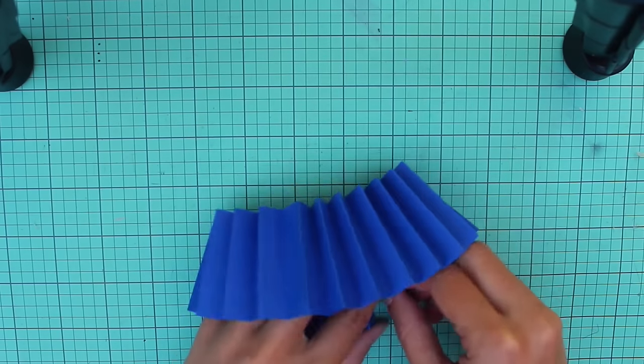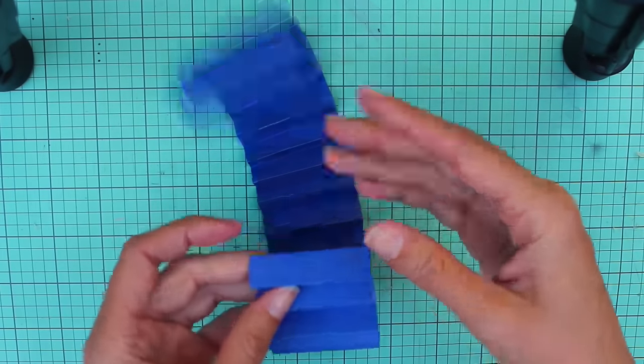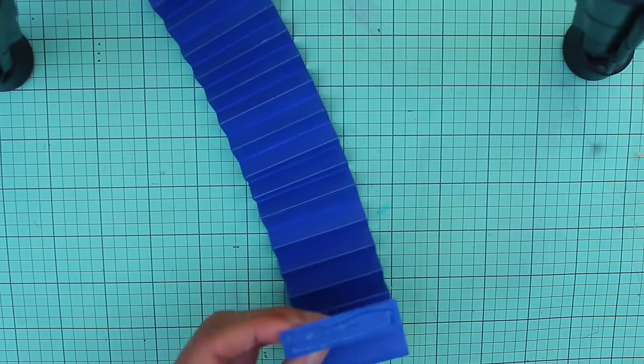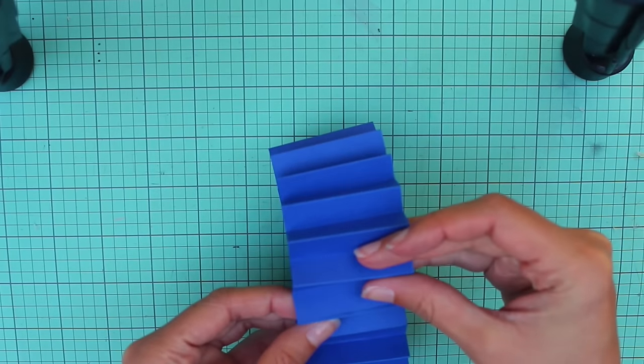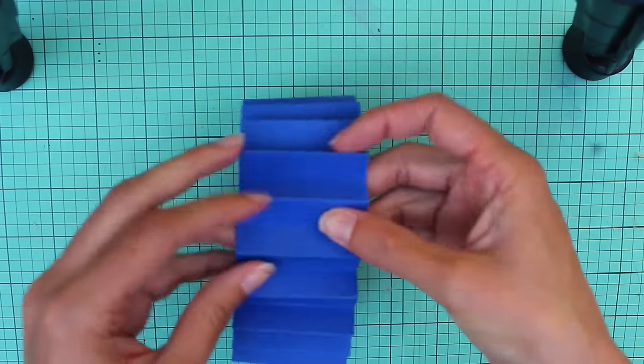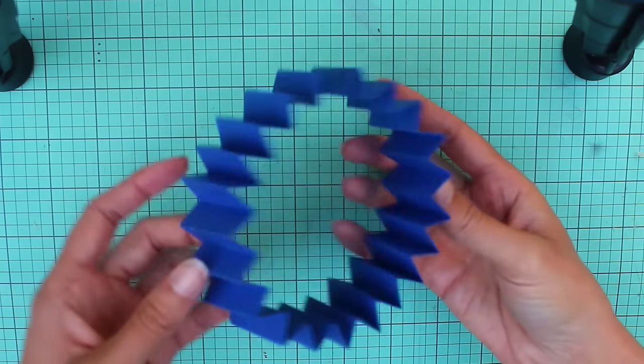You've got one piece. Now we're going to be gluing the other end together, just like before. Put glue on one end and press the other one in place.